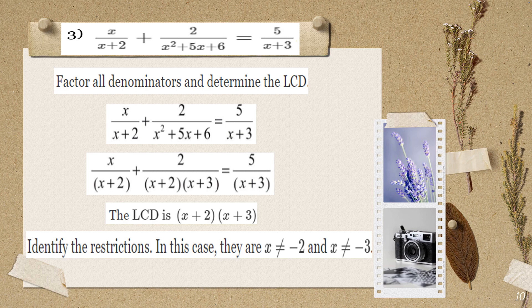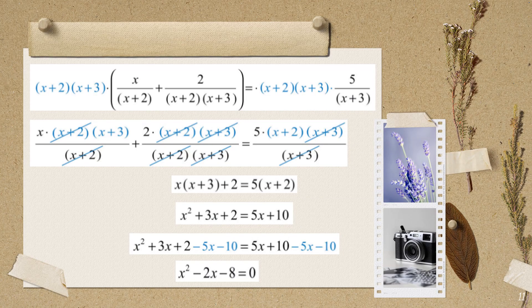So the denominators are x+2, (x+2)(x+3), and x+3. The least common denominator uses each unique factor once: LCD = (x+2)(x+3). The restrictions are x ≠ -2 and x ≠ -3, because those values would make a denominator equal to zero, resulting in undefined expressions.